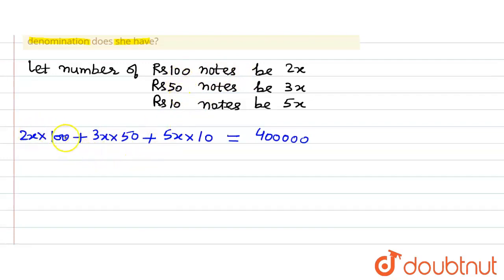So let's solve it. 2x into 100 is equal to 200x, 3x into 50 is 150x, 5x into 10 is 50x is equal to 400000. 200 plus 150 is 350 plus 50 is 400x is equal to 400,000.